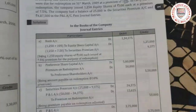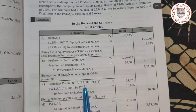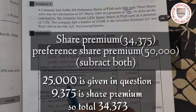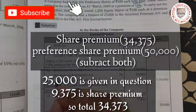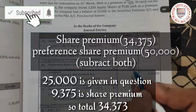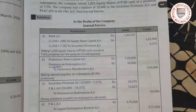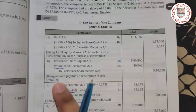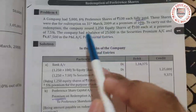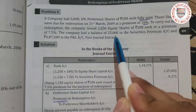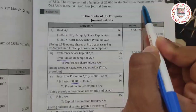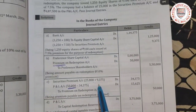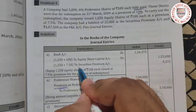Next, Securities Premium Account. The premium on redemption that we wrote earlier will be carried out here. The amount is ₹50,000. In the question, the company had a balance of ₹25,000 in the securities premium account.